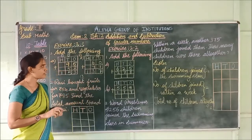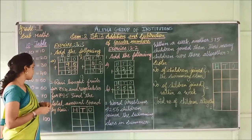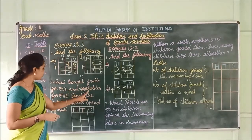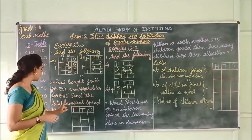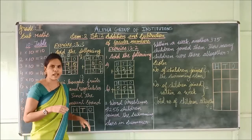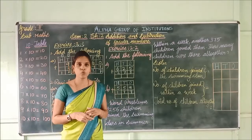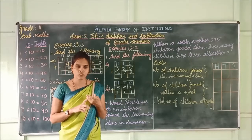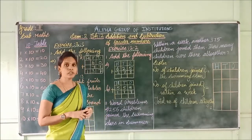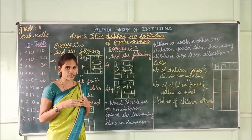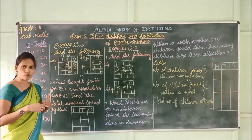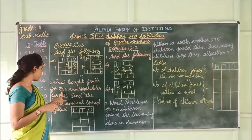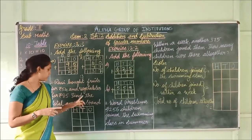Okay children, you know addition, so do more problems for practice. Shall we move on to the word problem? Ravi got fruits for rupees 54 and vegetables for rupees 85. Find the total amount spent by Ravi. You have some keywords for addition in word problems — and, total, all together, sum. What is the keyword here? Total. So we have to do addition.